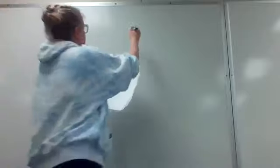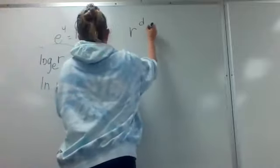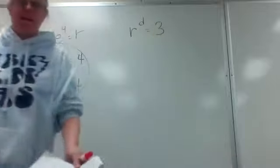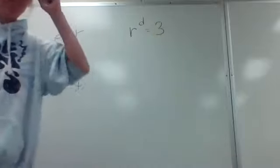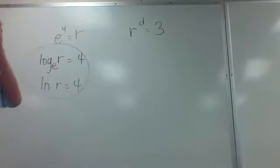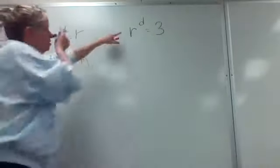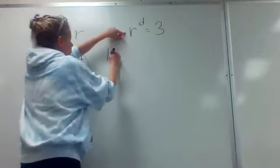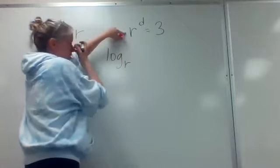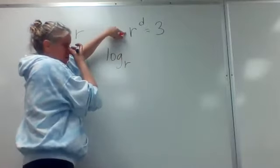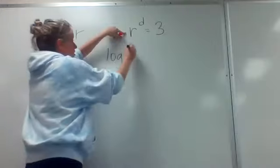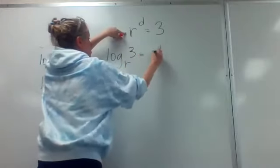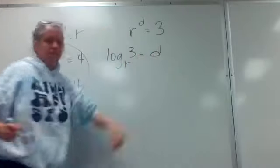Number 20: r to the d power equals 3. The base of your exponent is the base of your log. So: log base r of 3 equals d.